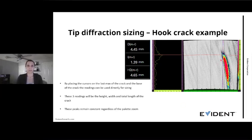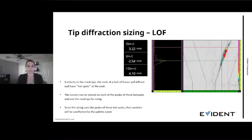For the same hook crack we're showing here with the reading, placing the cursors on the max and at the base because it's connected. Three readings will be the height, the width, and the total length of the crack. The peak remains constant regardless of the palette or the zoom that we are using, because we are using the A-scan here. Similarly here for a lack of sidewall fusion. Same way of replacing the cursors on the hot spot at the end of the indication, making it very easy here to size.